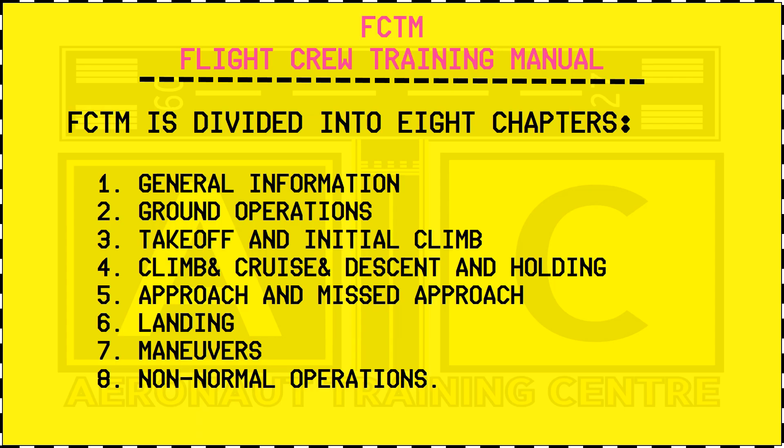Now let's see what the Flight Crew Training Manual is. FCTM is divided into eight chapters: general information, ground operations, take-off and initial climb, climb, cruise, descend and holding, approach and missed approach, landing, and maneuvers and non-normal operations.